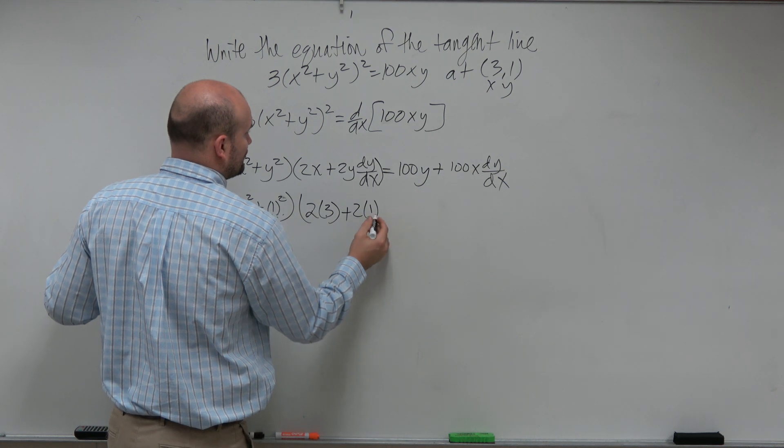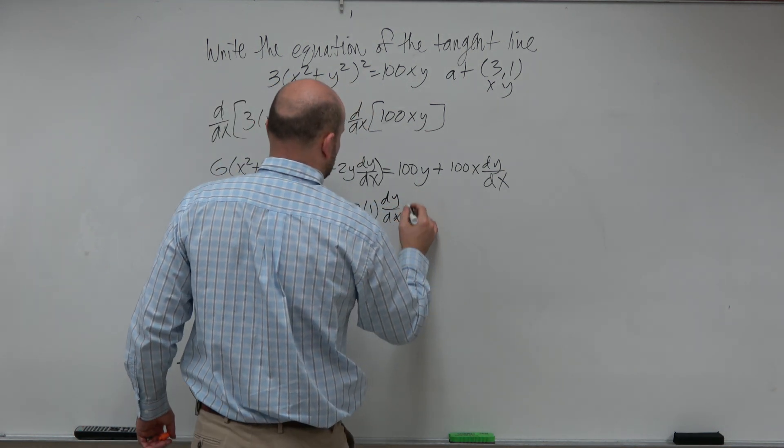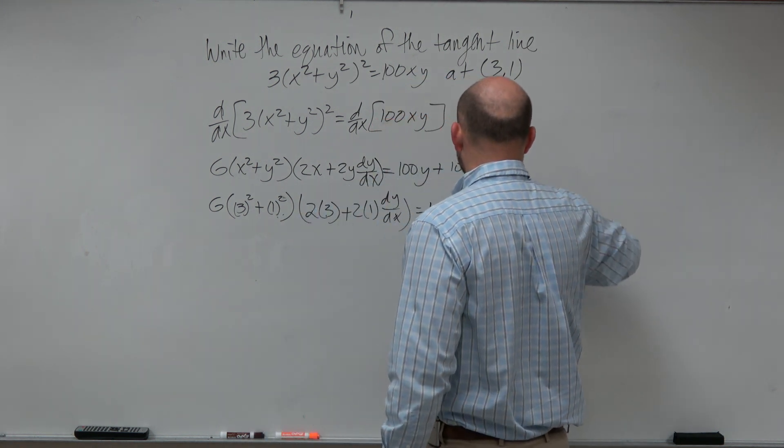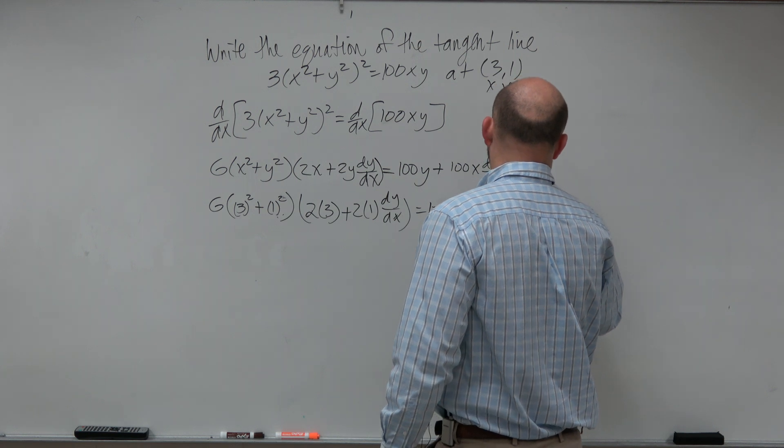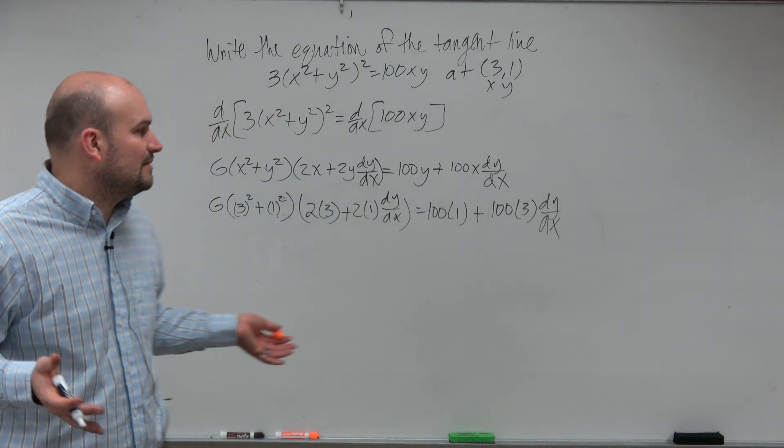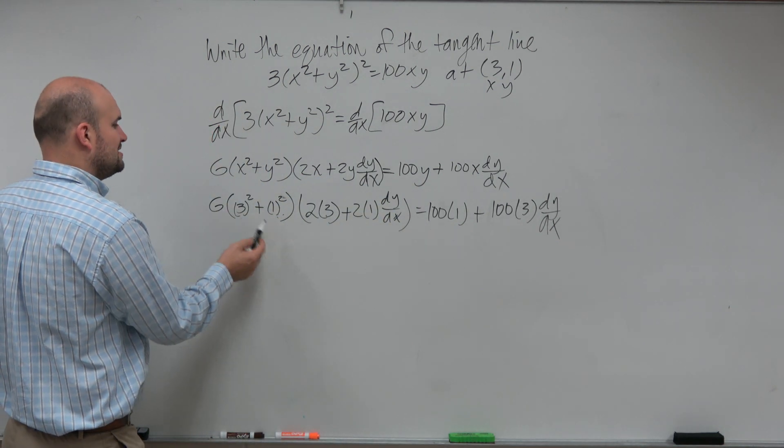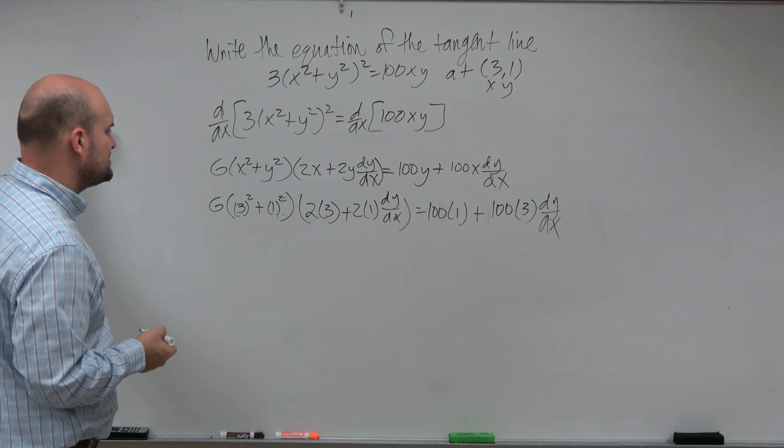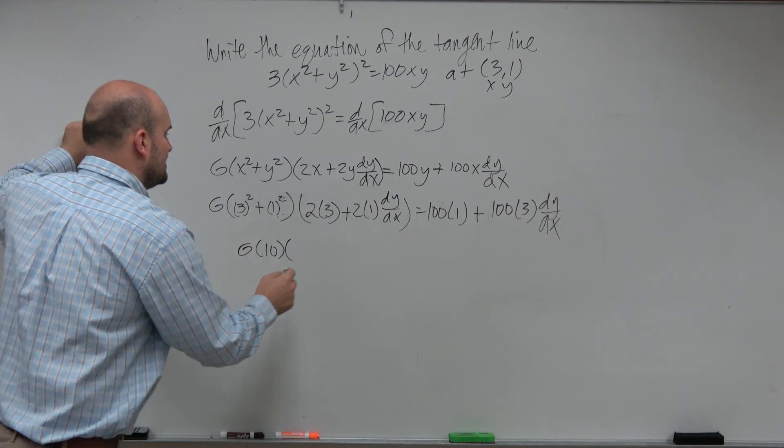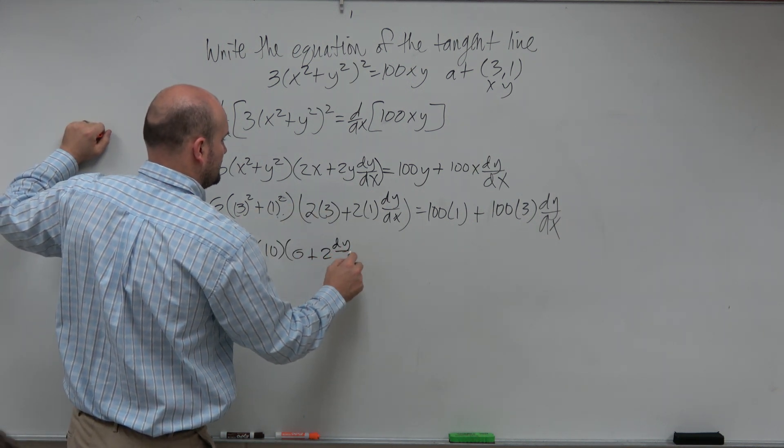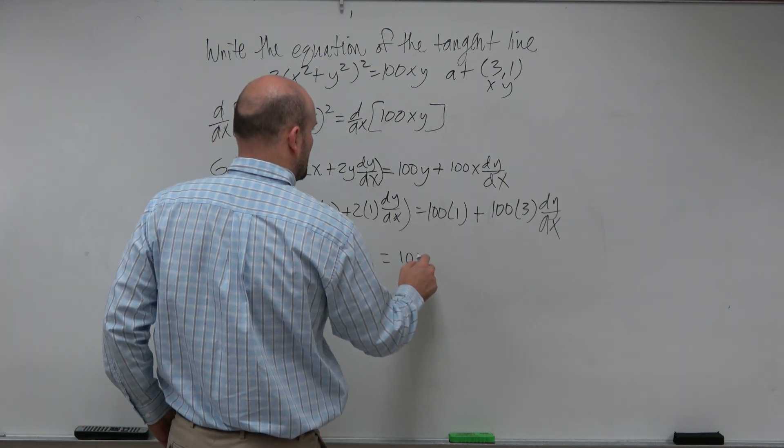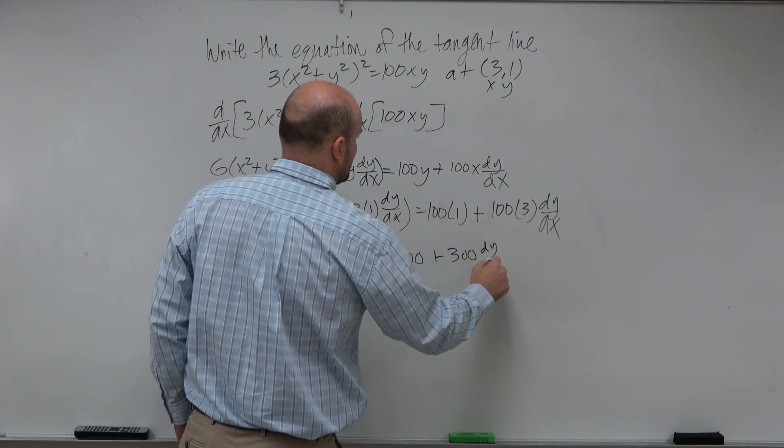Now, it's still not like there's no work involved. But I would say it's much easier this way than having to go through all the work of solving. Because that's really what you're doing anyways when you do this. So let's go ahead and simplify here. So we have 3 squared is 9 plus 1 squared is 10, so it's going to be 6 times 10 times 6 plus 2 dy/dx equals 100 plus 300 dy/dx.